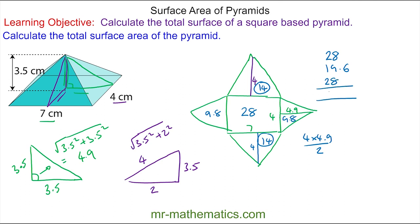So the total surface area of this rectangular base pyramid is 75.6 centimeters squared. Okay, thank you very much for watching and I hope you found that useful. Thanks again and take care.